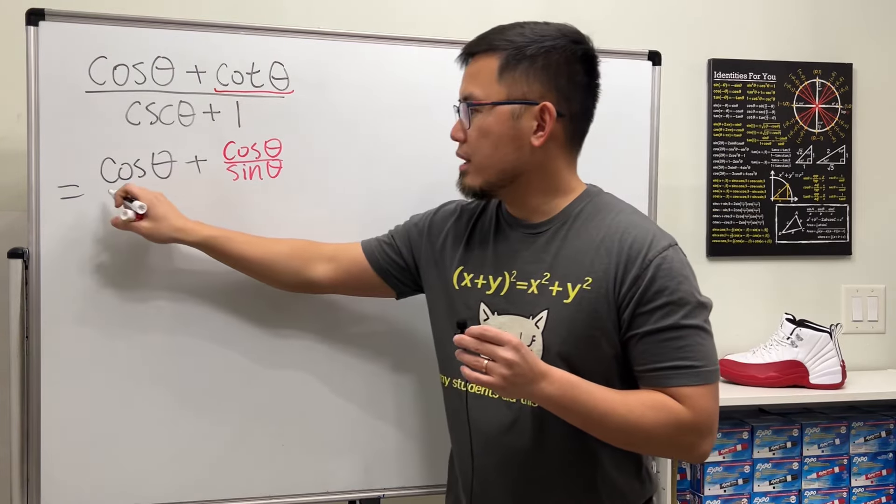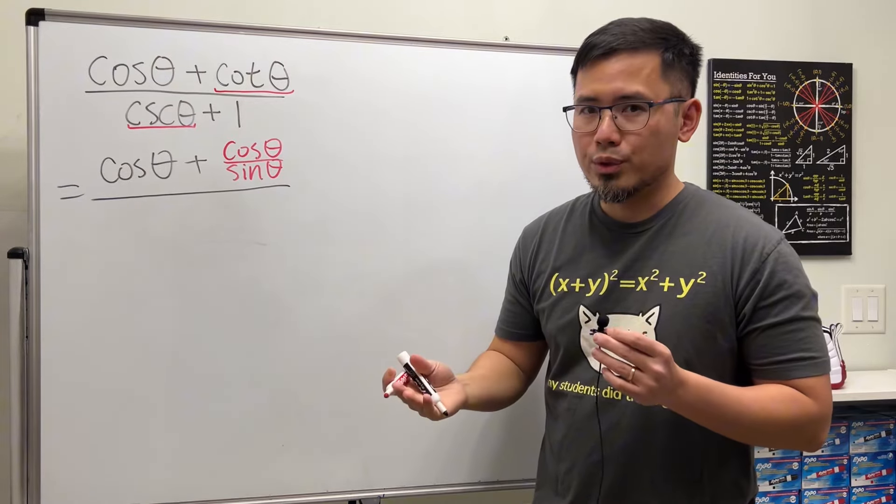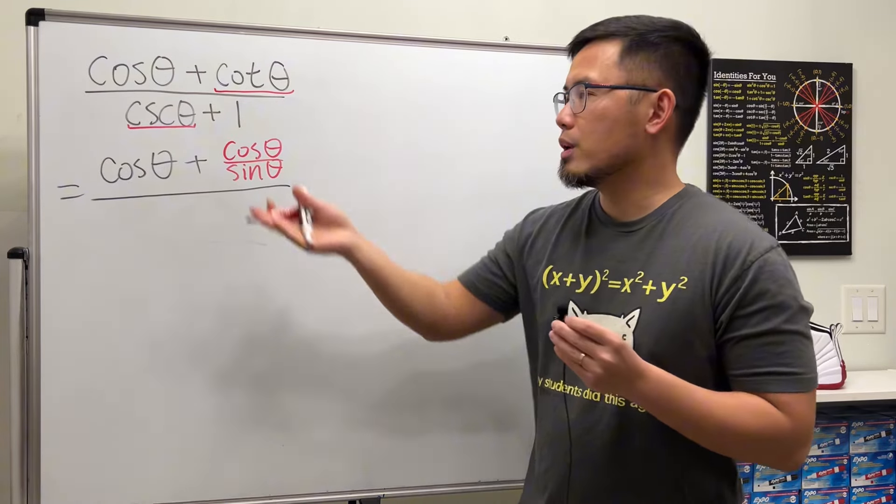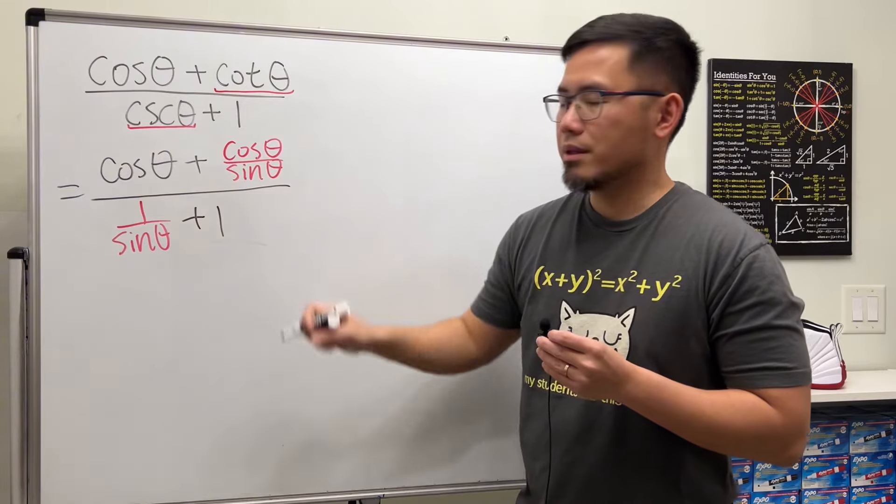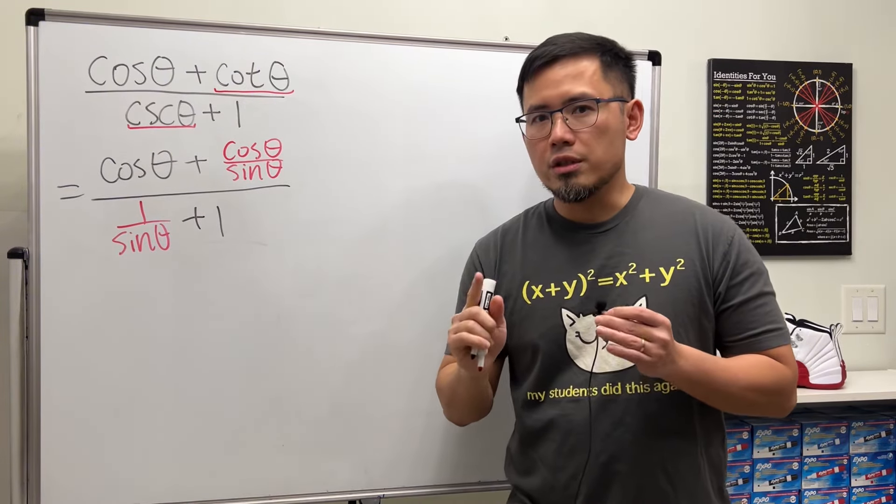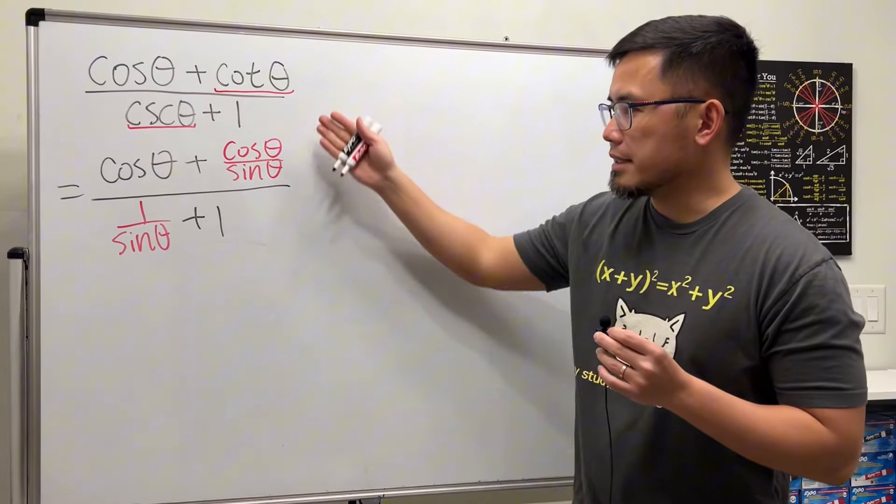And then over here we have cosecant theta. What do we do? Again, change that to its reciprocal identity. That is 1 over sine theta. And then here we have the plus 1. So the first strategy is always try to work with sine and cosine only. That is exactly what we did.